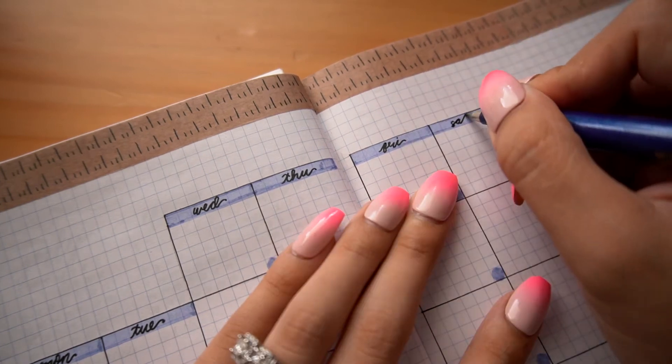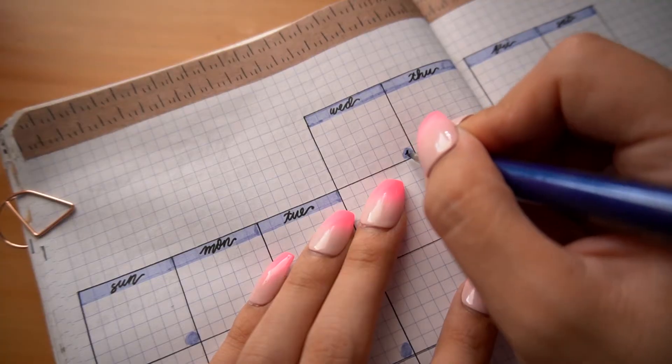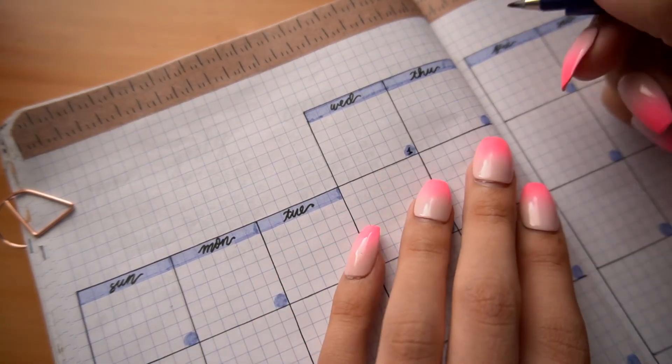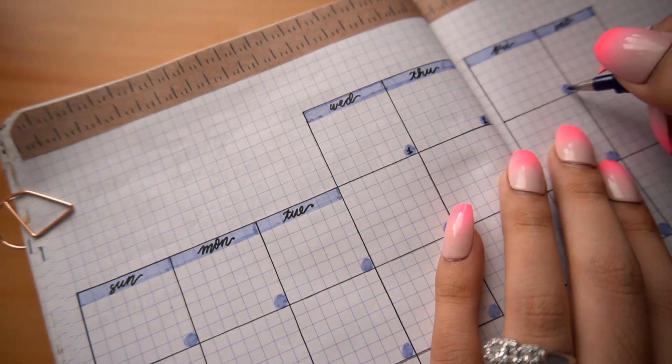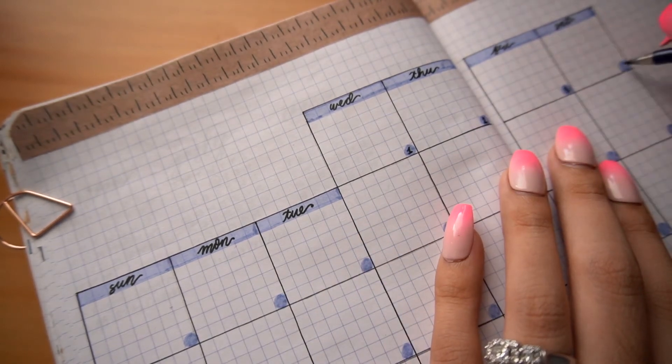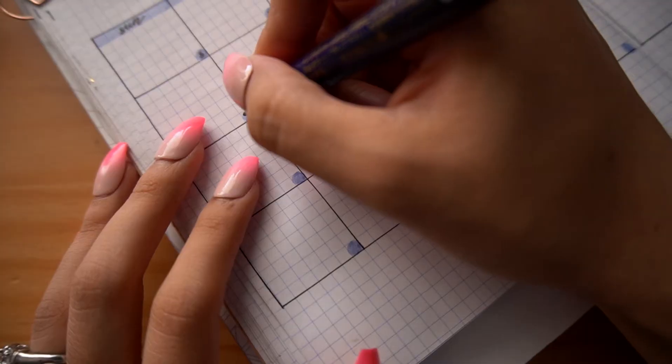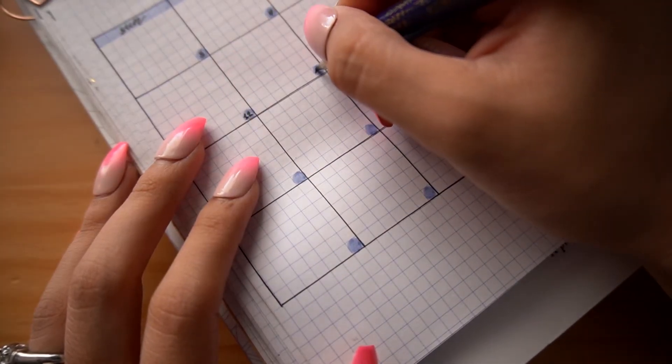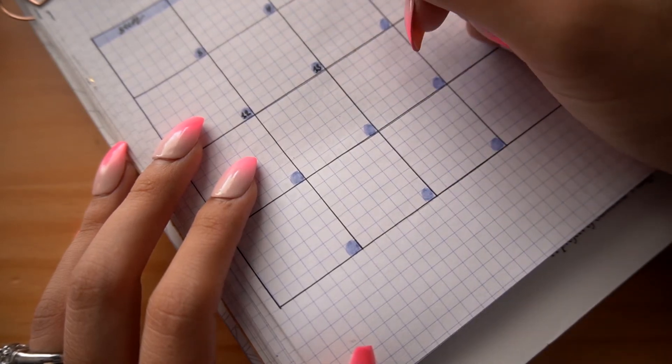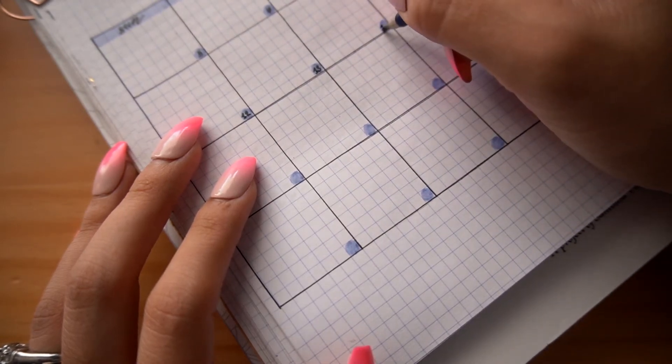If you've watched my previous plan with me videos that I've done in my bullet journal, you know that I'm a fan of the traditional monthly calendar. For the month of July, that still rings true. I went ahead and put together my little monthly calendar, and I'm just filling in the days for the month of July.